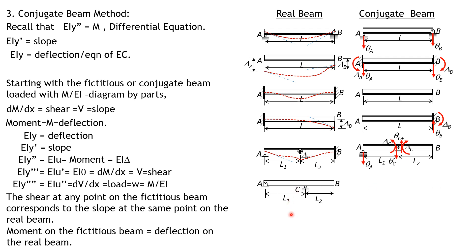In another case, if A is a pin end-support, it remains a pin in the conjugate beam. B is the free end, so it becomes fixed in the conjugate beam. For an interior roller at C in the real beam, there is rotation but no deflection — so a support with no moment but shear resistance is an interior hinge. Therefore, A remains a pin, C becomes an interior hinge, and B is fixed.